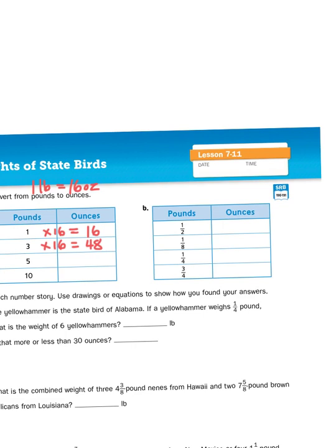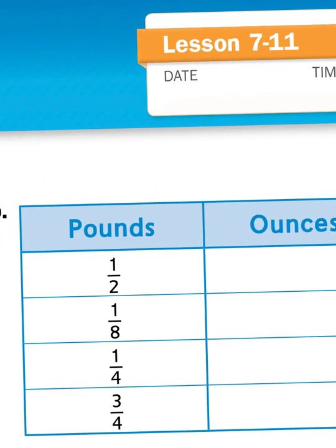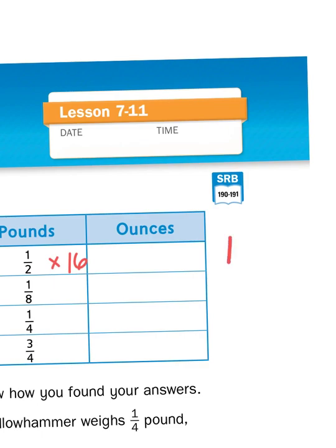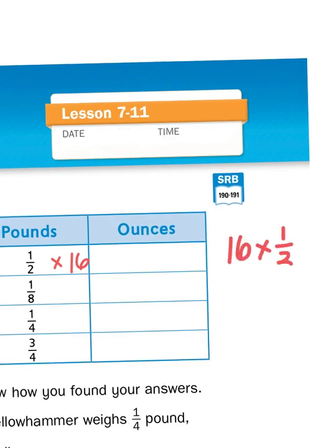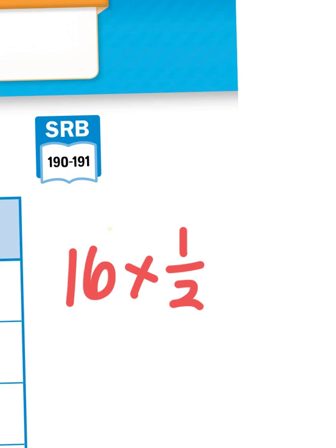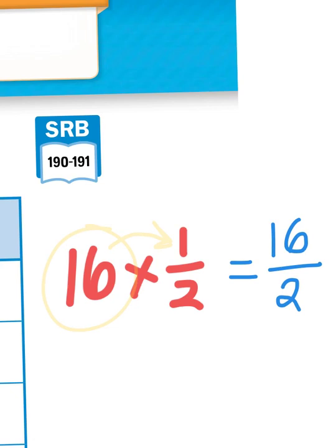You would do the same thing in 1B — multiply the number in the left column by 16. However, here we're dealing with fractions of a pound, so we need to multiply 16 by a fraction. When we multiply a whole number by a fraction, such as 16 times 1 half, one way to think about that is 16 groups of 1 half together. There is a simpler way: take that whole number and multiply it by the numerator, that top number. So 16 times 1 is 16, giving us 16 halves — 16 over 2.